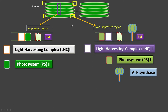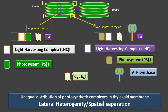LHC2 and PS2 are arranged in the appressed region, while LHC1, Photosystem 1, and ATP synthase are arranged in the non-appressed region. However, there are some complexes present in both regions — this protein complex is called cytochrome b6f. This distribution of thylakoid complexes in the thylakoid membrane is called lateral heterogeneity, or spatial separation — meaning there is a different space for each set of complexes.